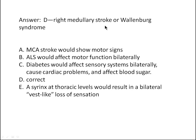The correct answer is right medullary stroke, or Wallenberg syndrome. An MCA stroke would show motor signs, which weren't present. ALS would affect motor function bilaterally. Diabetes would affect sensory systems typically bilaterally with many other signs — cardiac problems, blood sugar problems, skin healing issues. A thoracic syrinx would result in a bilateral vest-like loss of sensation due to bilateral disruption of the spinothalamic tract.